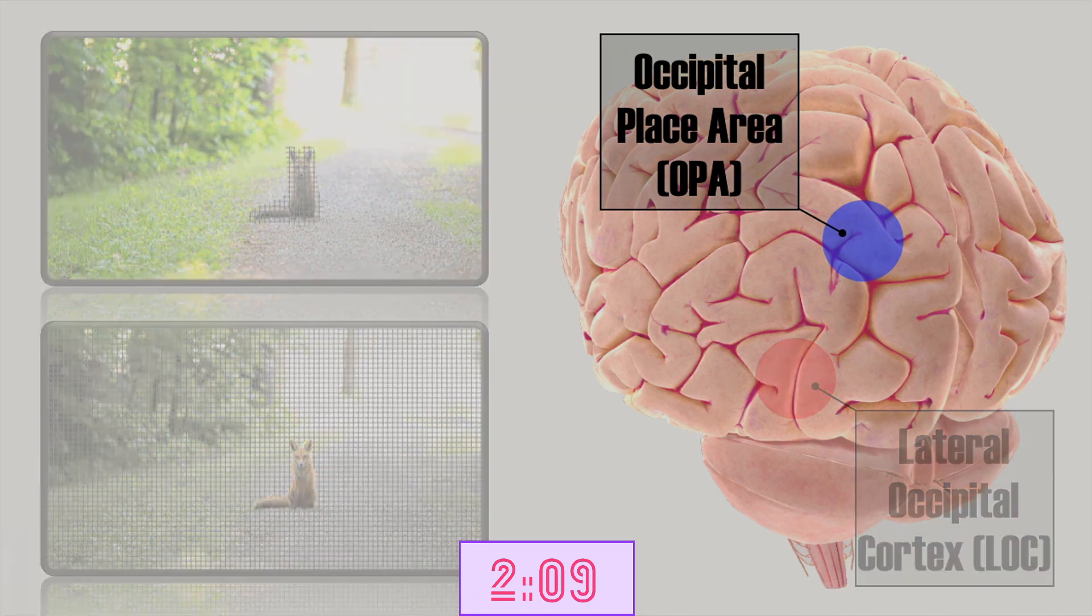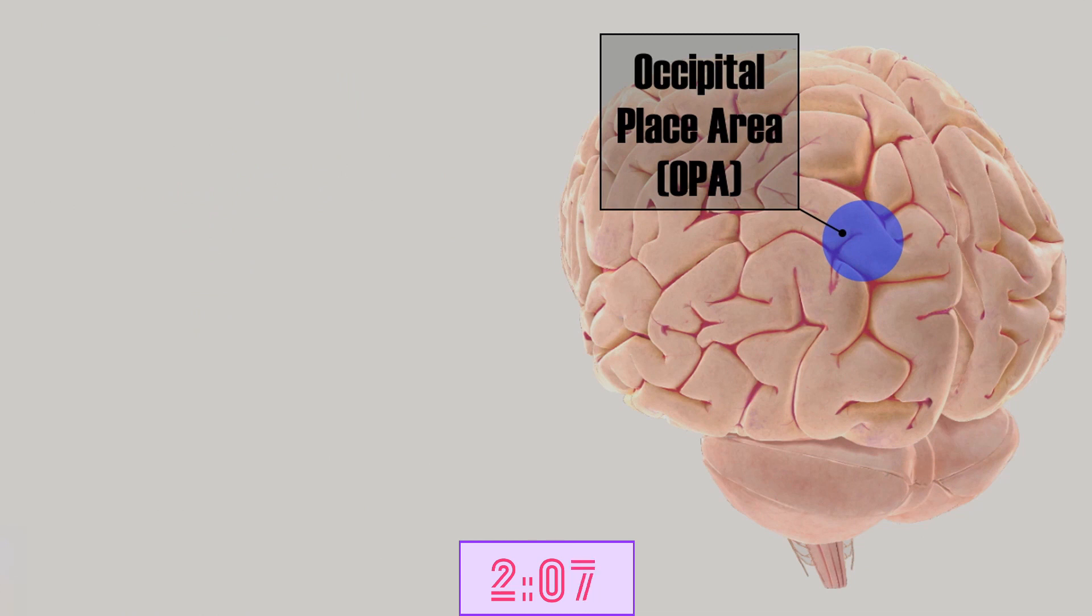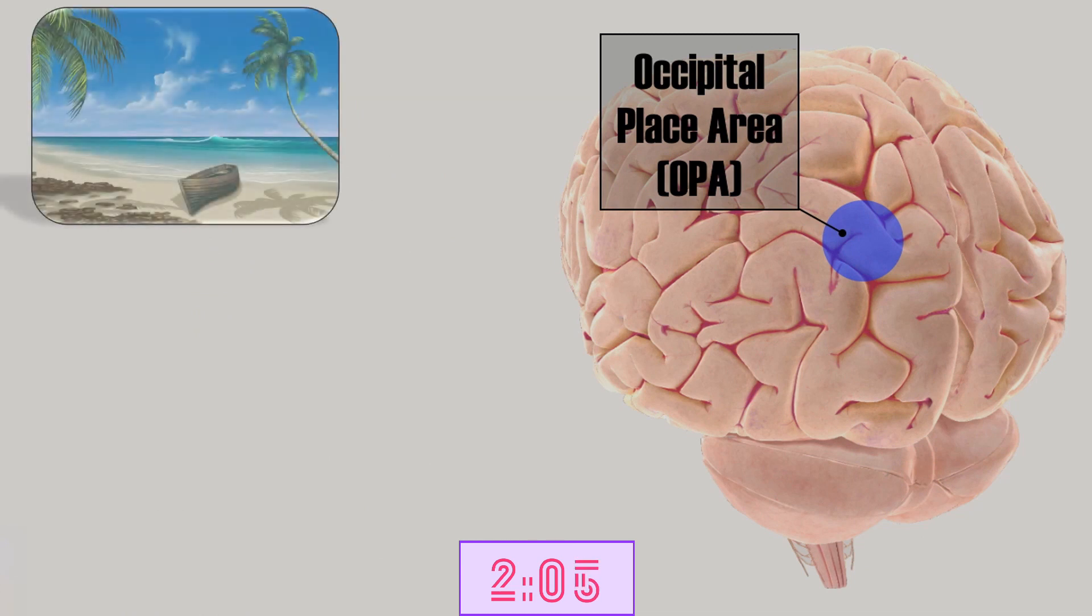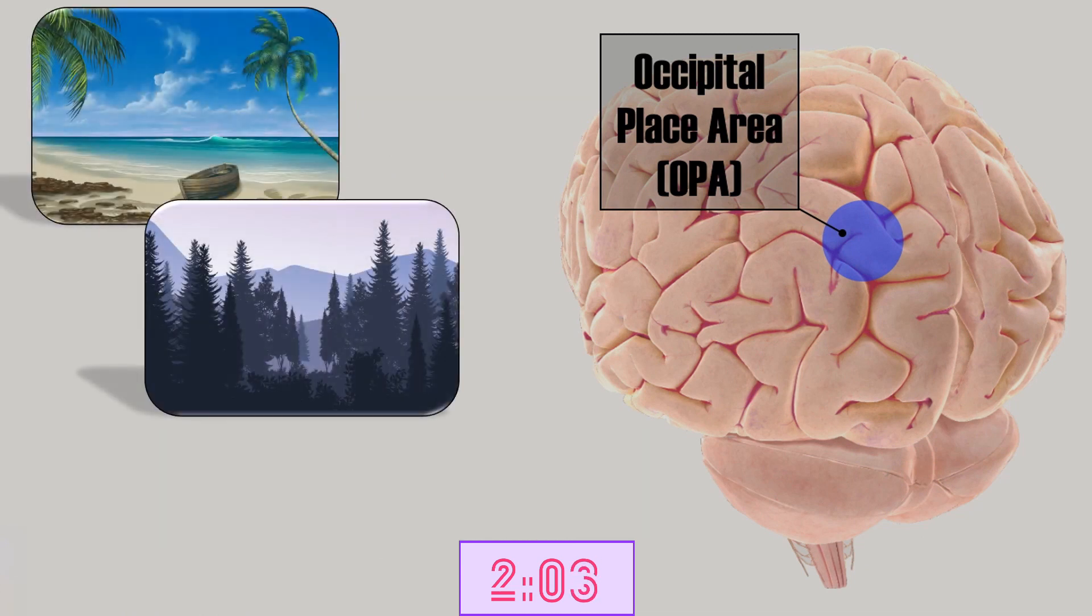The occipital place area is activated when seeing places and background sceneries, like a beach, a forest, or a city setting.